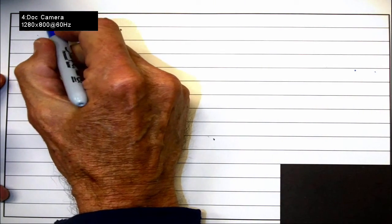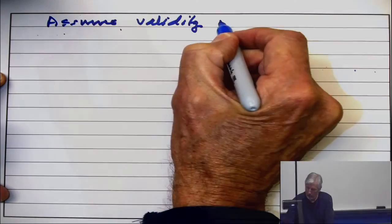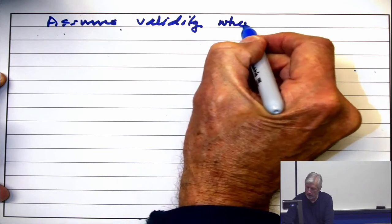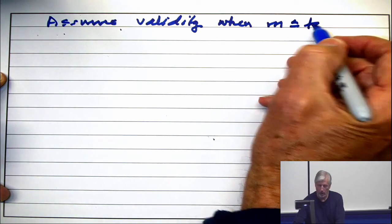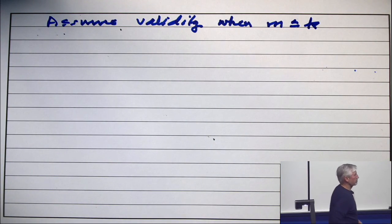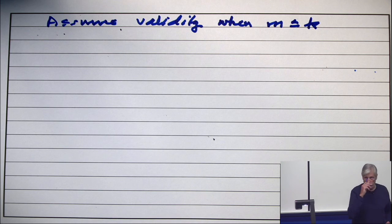We're going to assume validity when m is less than or equal to some k, where k is just a positive integer. It's the only assumption we make about it.